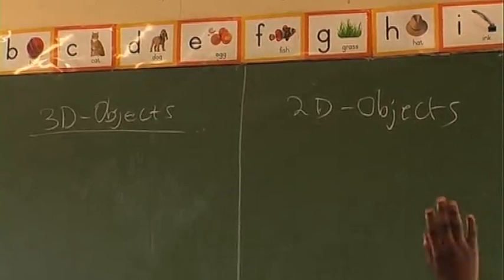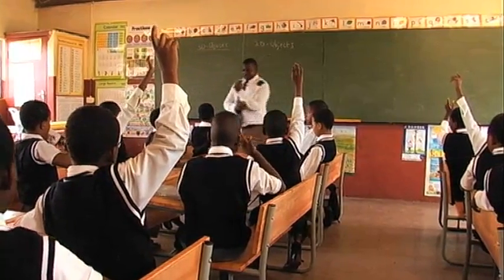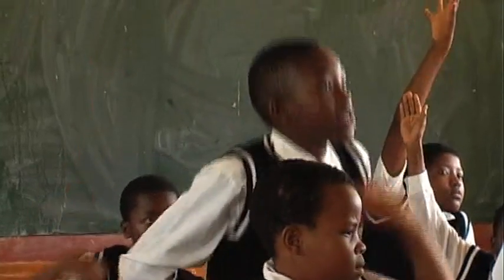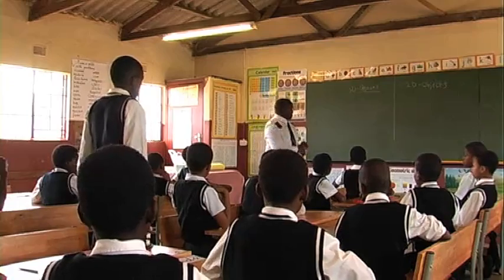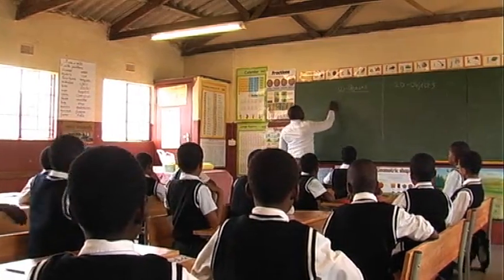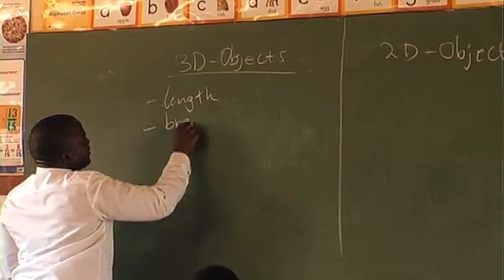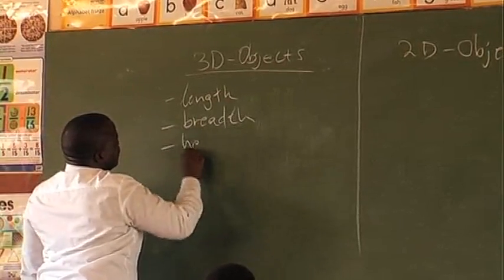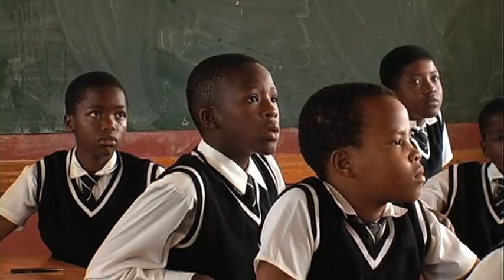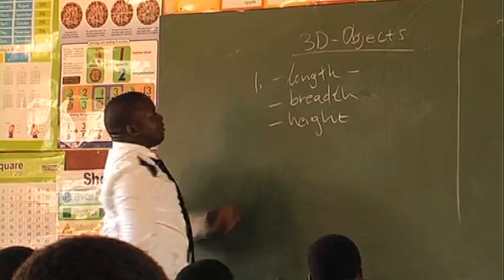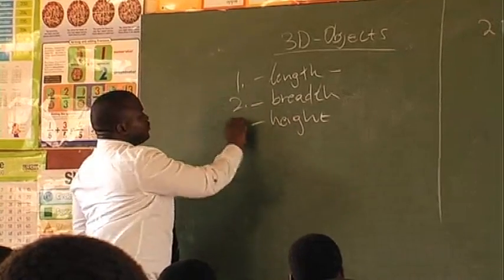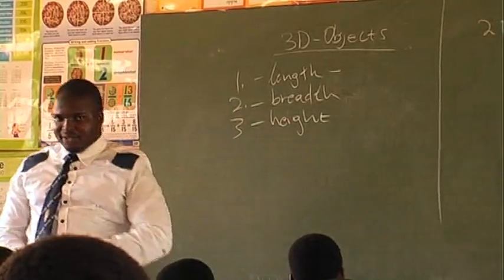The second step is the introduction of the 2D shapes and the 3D shapes, to give me more and the prior knowledge that they have about 2D and 3D shapes. What is 3D? The length and the breadth and the height. Yes, the length, breadth, and what? The height. This is dimension number one, dimension number two, and dimension number three.